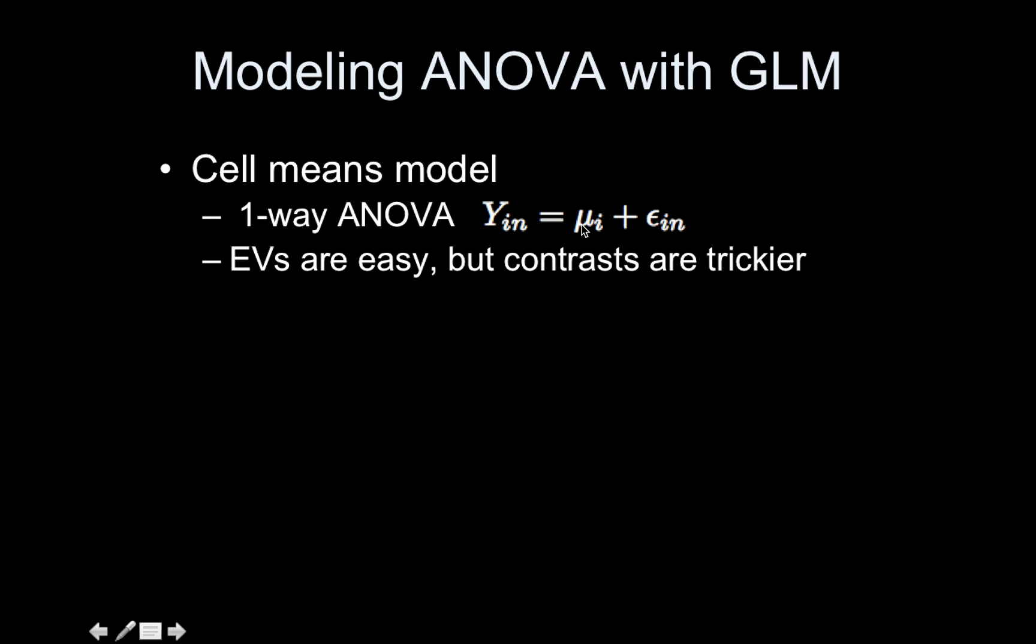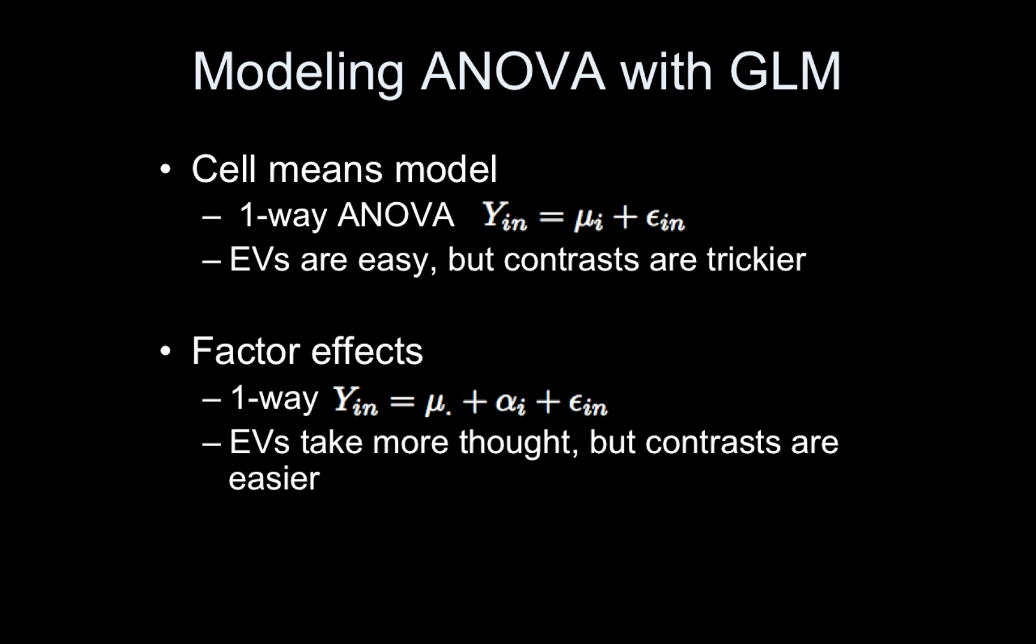The regressors, which I will often call EVs—sorry, it is FSL specific, but it stands for explanatory variable—the regressors for this setup are really easy, but the contrasts can be much trickier. That's why I'm giving you two ways of doing it. It depends on what your hypothesis is that you're interested in testing. One of these models might be easier to set up depending on your hypothesis.